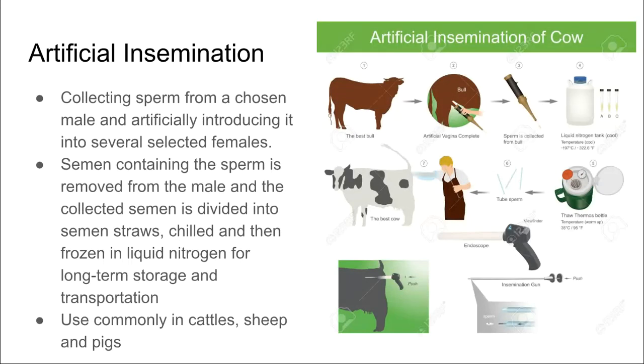Artificial insemination, on the other hand, is when we collect sperm from a chosen male and artificially introduce it into females. And in this process, we're able to introduce it into several selected females.